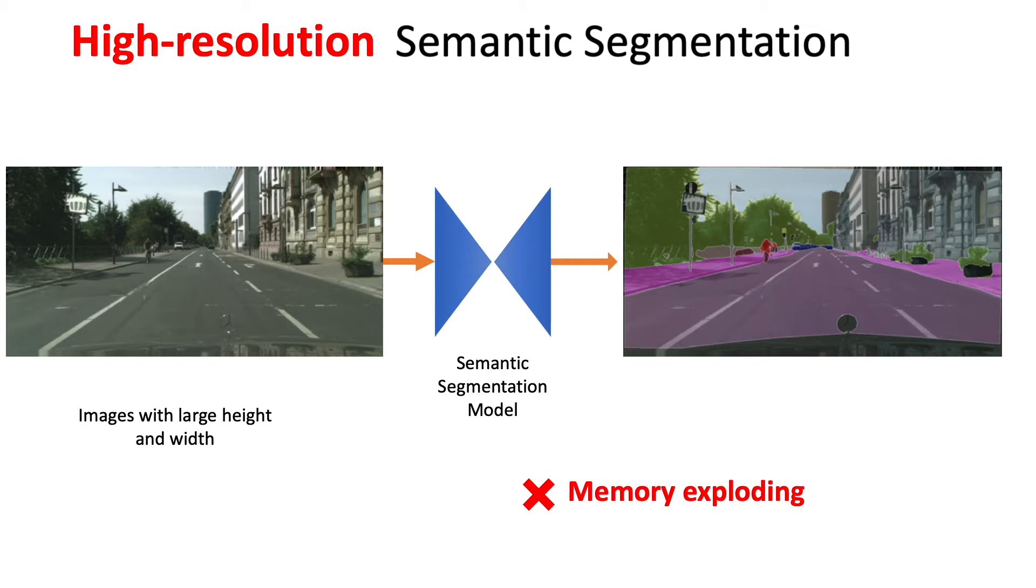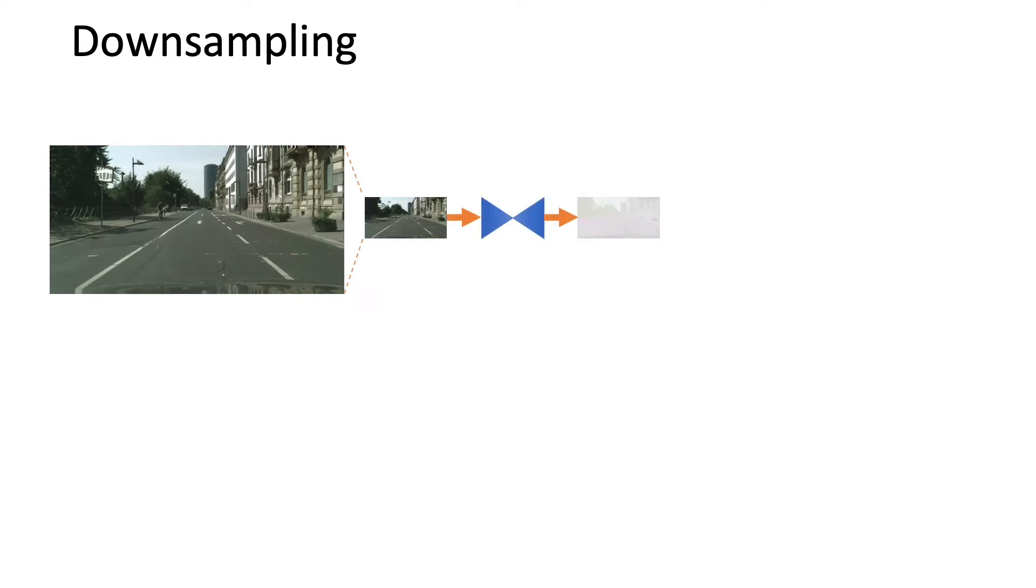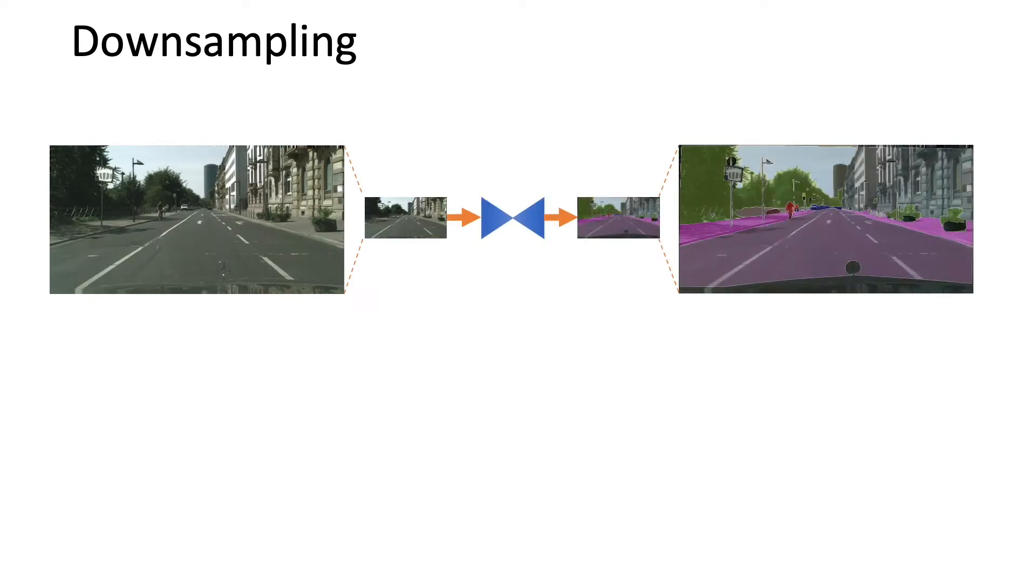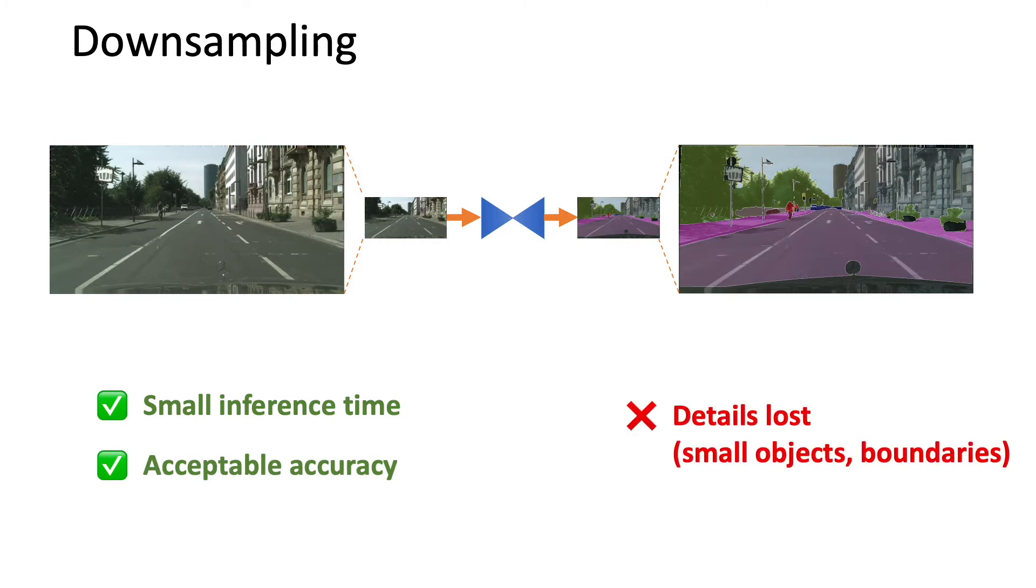There are two typical approaches to this task, namely downsampling and patch processing. In downsampling, the high-res images are rescaled to a smaller size which can be fed to the memory. The output of the model is then rescaled back to the image size. This approach is practically used due to the low latency in inference and acceptable segmentation accuracy. However, during downsampling, the details are lost and the results are coarse.